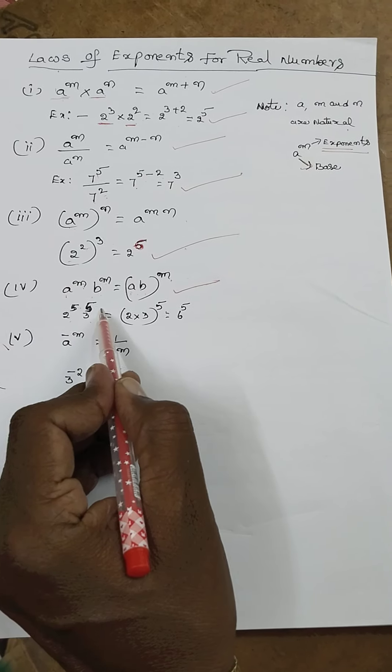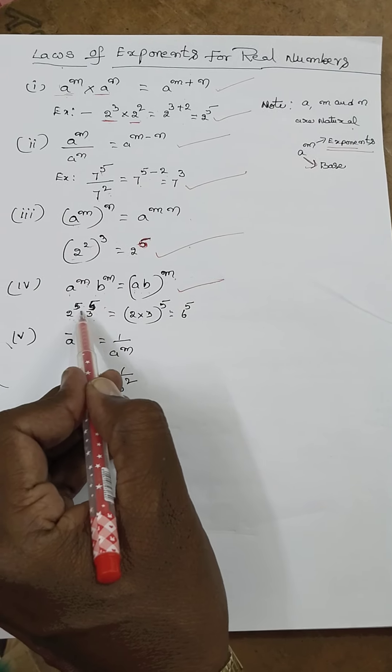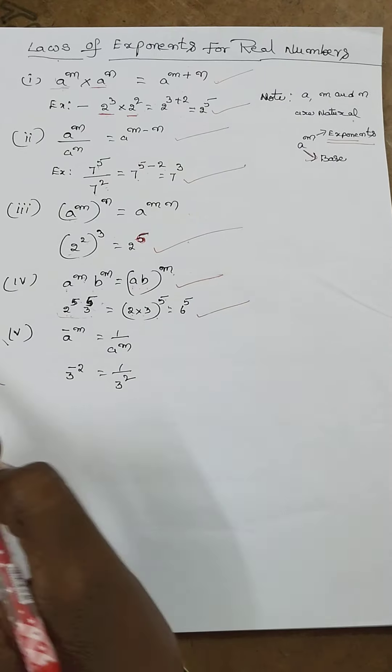Next, 2^5 × 3^5. Powers are equal, exponents are equal, so bases are multiplied. (2×3)^5. 2×3 is 6, so 6^5.